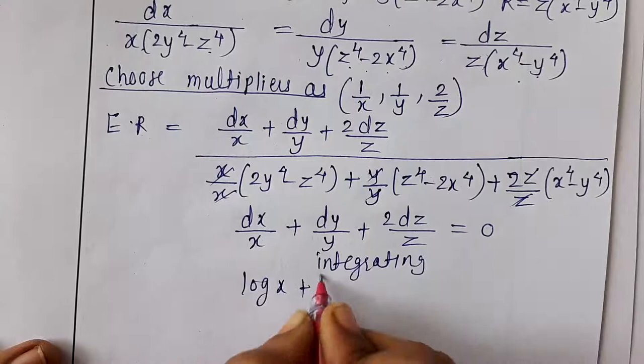Integrating gives x⁴/4 + y⁴/4 + z⁴/4 = c₂, so x⁴ + y⁴ + z⁴ = 4c₂ = b, which is v, the second solution. The complete solution is φ(xyz², x⁴ + y⁴ + z⁴) = 0. You can solve more examples on the method of multipliers by choosing multipliers suited to the problem. Thank you.